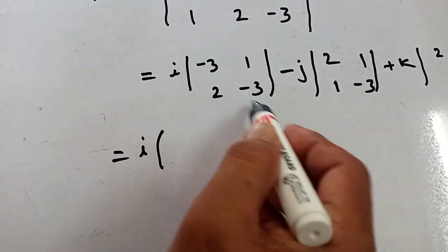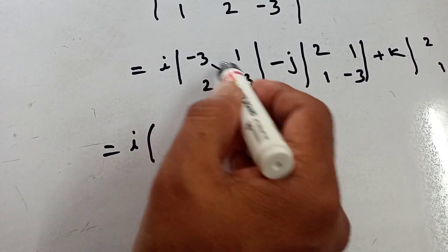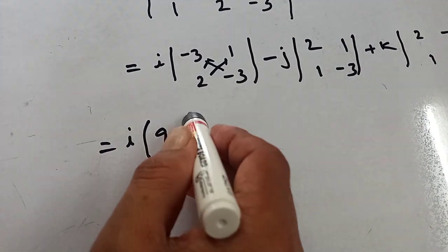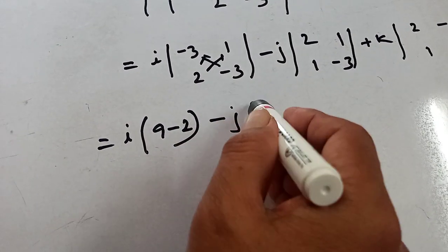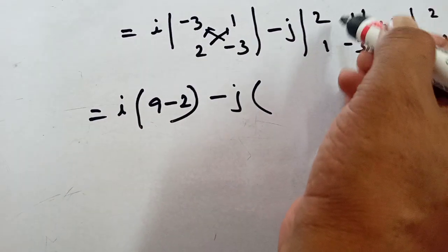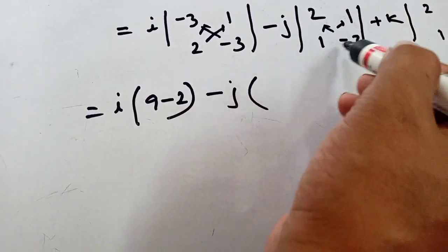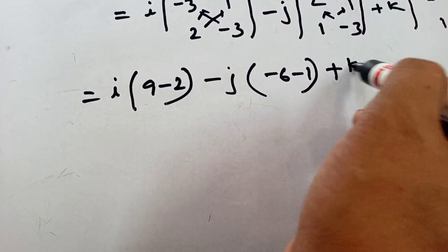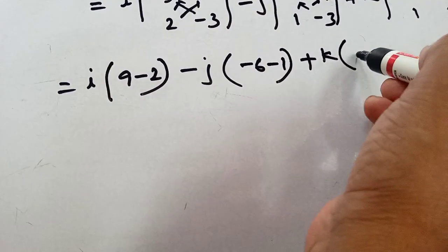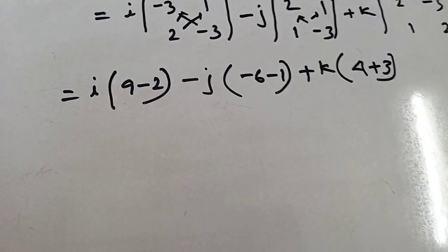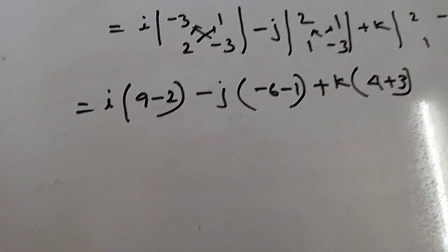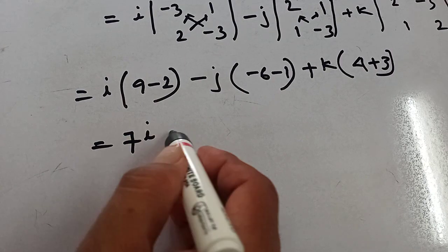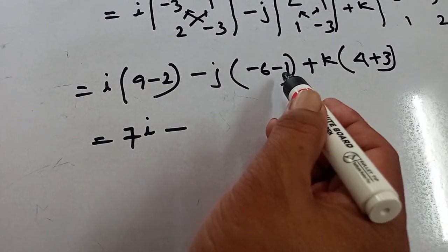i: this into this minus this into this — that means (minus 3 × minus 3) minus (1 × 2) = 9 minus 2 = 7. j: this into this minus this into this — that means (2 × minus 3) minus (1 × 1) = minus 6 minus 1 = minus 7, so minus j gives plus 7j. k: this into this minus this into this — that means (2 × 2) minus (minus 3 × 1) = 4 plus 3 = 7.